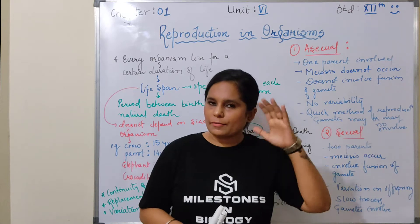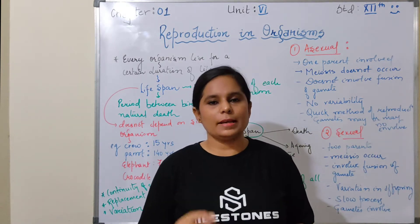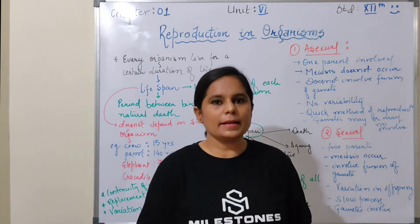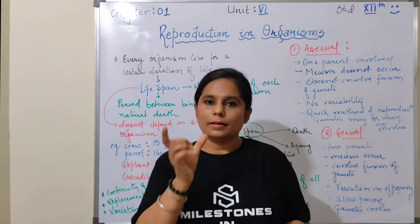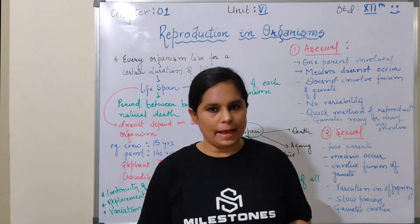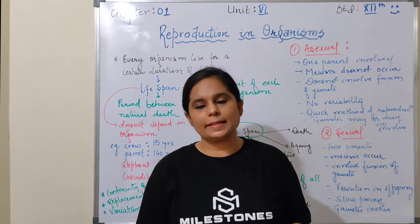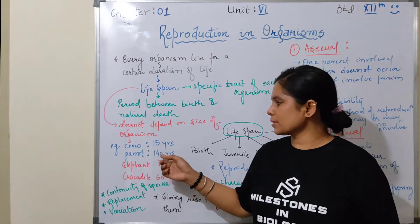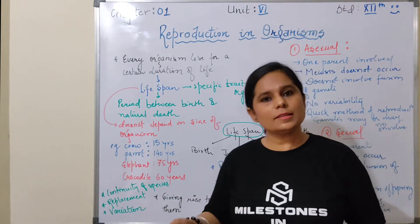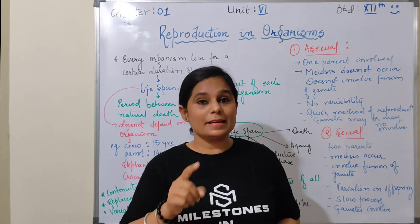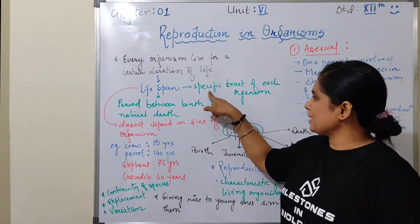In the very first pages of this chapter, it is mentioned that the life span of an organism is a duration. The life span of an organism never depends on the size of the organism. For example, the parrot's life span is 140 years, whereas the crow's life span is 15 years. The size is approximately the same, but there is variation in their life span.